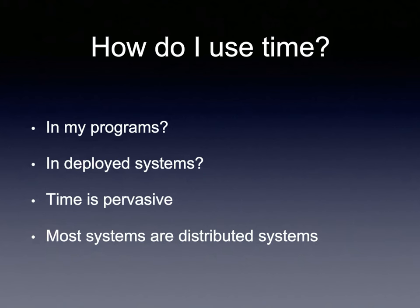Every system today is pretty much a distributed system. Most applications are distributed in terms of sharding data across multiple systems for database operations in a data center, and also across multiple data centers communicating over the internet. This is why you need to care about time in your programs — and how you're going to use it.